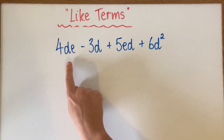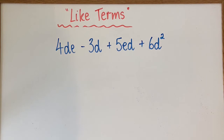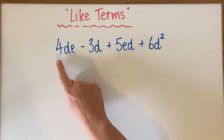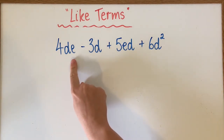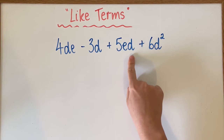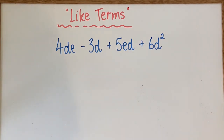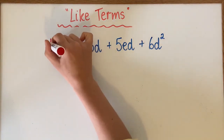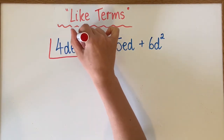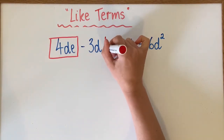For this last one we've got four different terms, and we've got a lot of D's and a lot of E's. This one is a little bit trickier because some things are a little bit misleading. You can see 4DE and you can see 5ED. They actually do have the same pronumerals — just because they're not in the same order doesn't mean they're not the same.